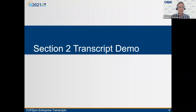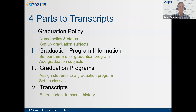There are four parts to the demonstration. One is setting up a graduation policy — naming the policy, setting its status, and setting up graduation subjects. The second part is the graduation program information — setting parameters and adding subjects. The third part is the graduation program itself — assigning students and setting up classes. Those first three steps are setup you only do once. The fourth part is what you use on a day-to-day basis: entering a student's past history transcript information from another school, while TE keeps up to date with what they do at your agency.